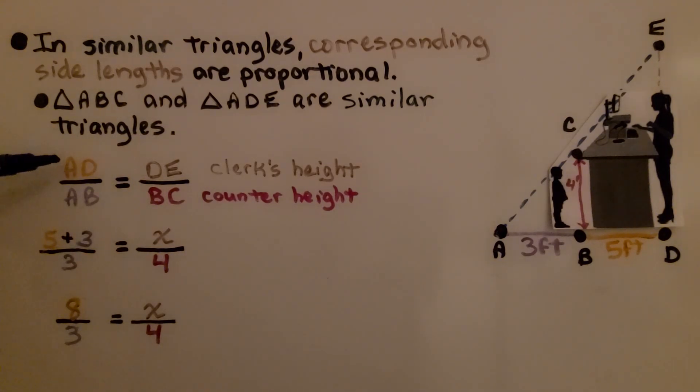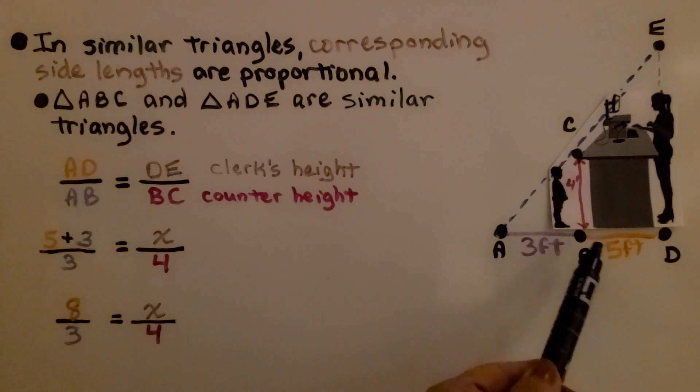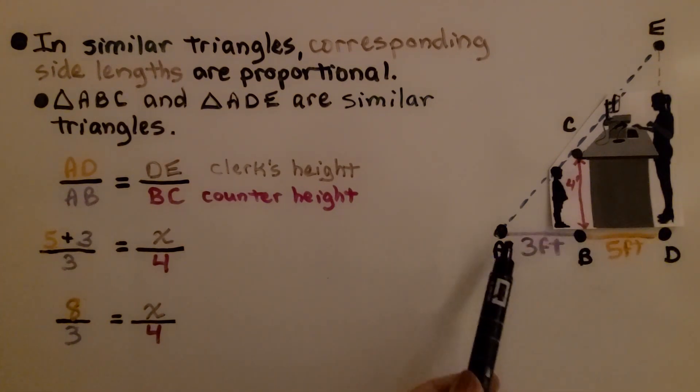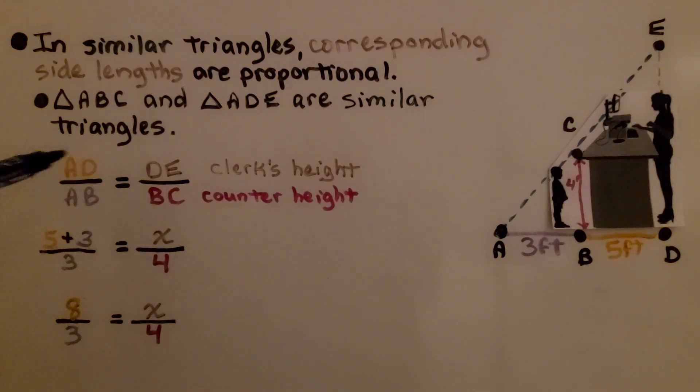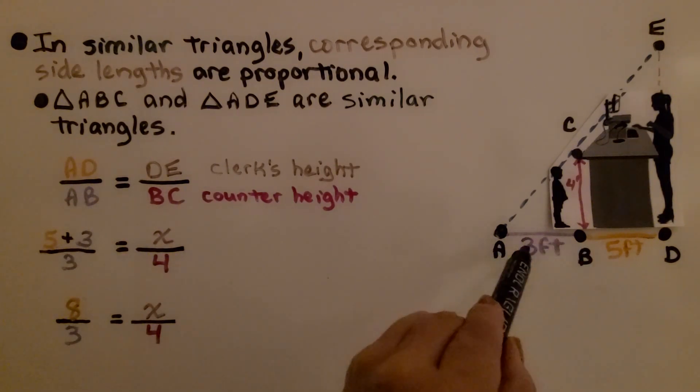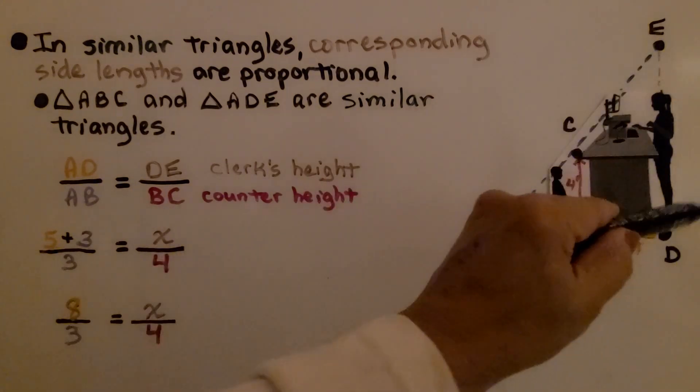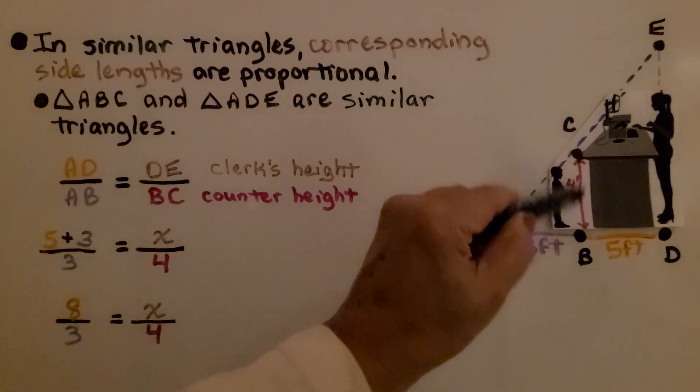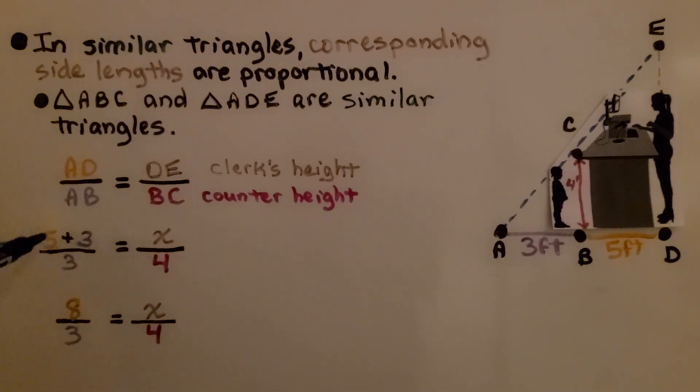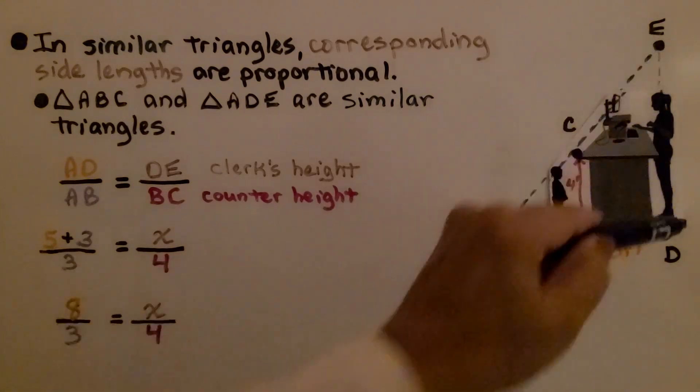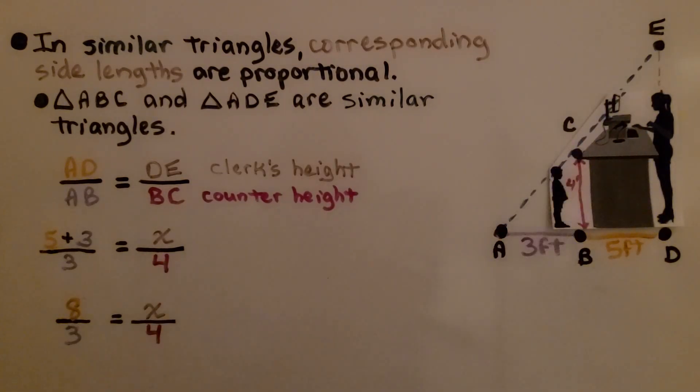We write our proportion. We've got AD, that's this length right here, all the way across from this point to this point, over AB, which is this part, and it's going to be set equal to DE over BC, the counter height. We have 5 plus 3 over 3 is equal to some height X over the counter height, 4 feet. 5 plus 3 is 8, so we have 8 thirds is equal to X over 4.